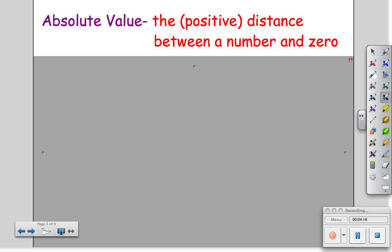Our last piece of vocabulary is absolute value. Absolute value is the positive distance between a number and zero.